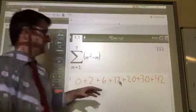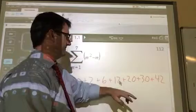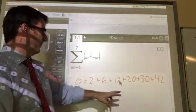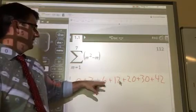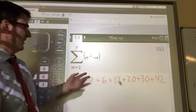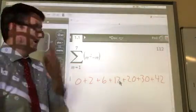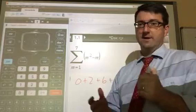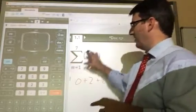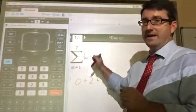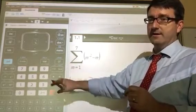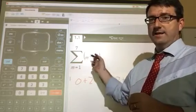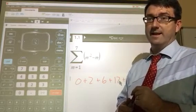And then if we added those all up, 42 plus 30 is 72. Plus 20 is 92. Plus 12 is 104. Plus 6 is 110. Plus 2 is 112. Plus 0, still 112. So that's how we get to that answer. But for most of these problems, you can just plug it directly in as it appears on the page into the calculator. You may have to rearrange these numbers like I did here in order to get a valid answer.